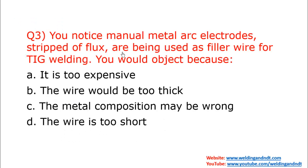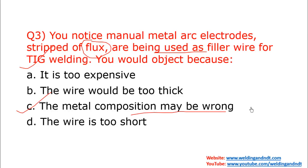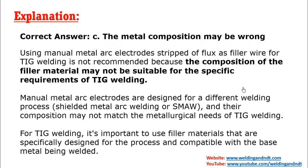Question number three: you notice manual metal arc electrodes stripped of flux being used as a filler wire for TIG welding. You would object because every electrode is designed specifically for that welding process. If it's a SMAW arc welding electrode, it has been designed only for SMAW. If you use that electrode as a filler wire in TIG welding after removing the flux, the metal composition may be wrong.